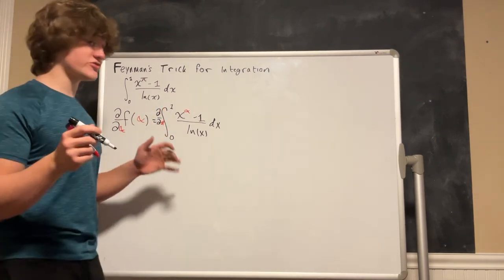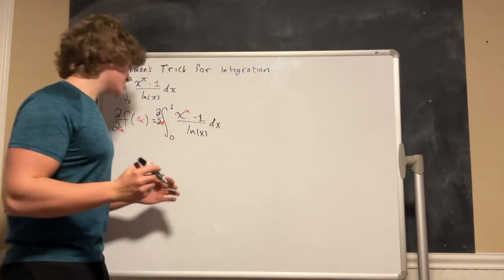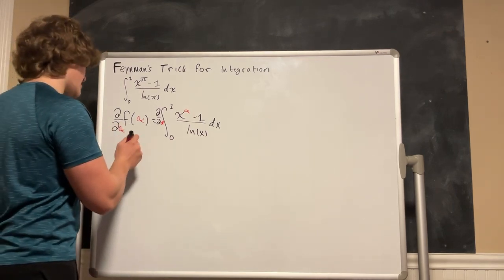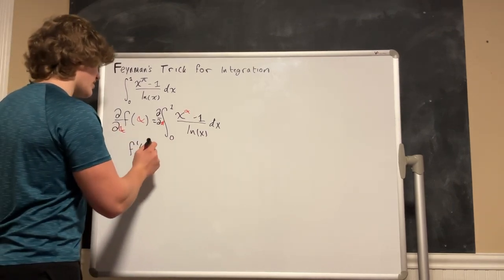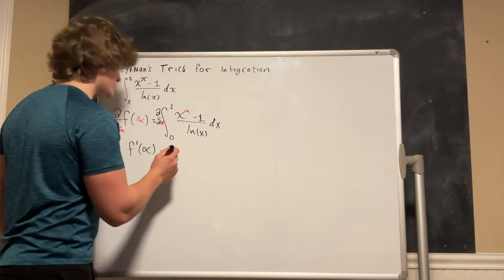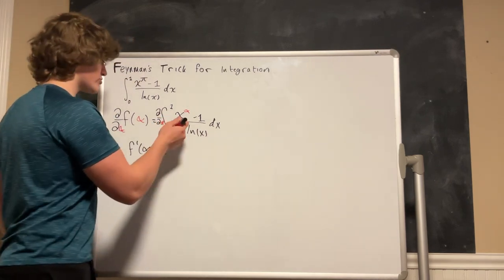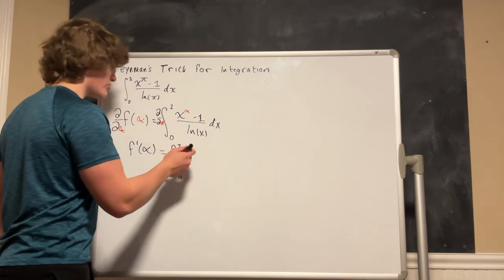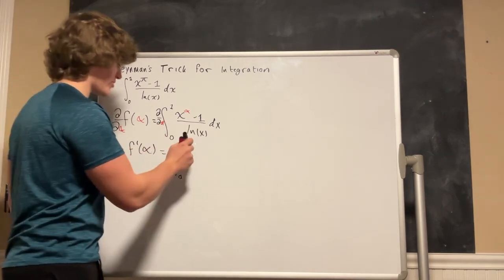Now if you don't know how partial derivatives work I will teach this to you really quickly. So this side is just going to give us f prime of alpha which is equal to, now we are going to move this partial derivative down to the inside and we are going to rearrange this function.